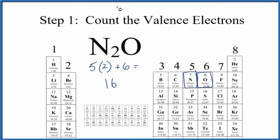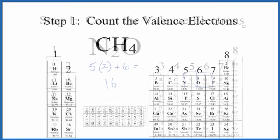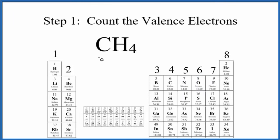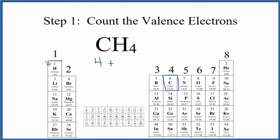This first step is crucial — if we don't get the right number of valence electrons, we won't get the right Lewis structure. Let's try one more. Pause and find the number of valence electrons for CH4, methane. Carbon has four valence electrons, plus hydrogen in group 1 has one valence electron — multiply by four. That gives a total of eight valence electrons for CH4.